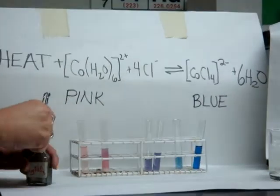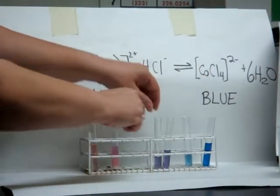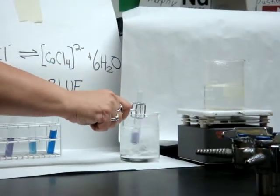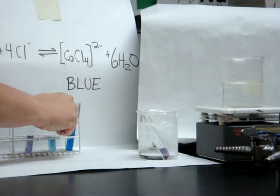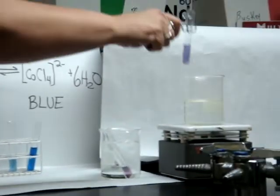Now, one of the other stresses we're going to use is a change in temperature. So I'm going to take this tube and I'm going to put it in the ice water. It's going to go blue. It's going to go right. And I'm going to take this tube and put it in the hot water bath up here.